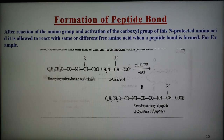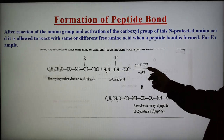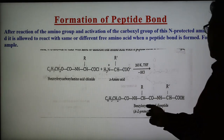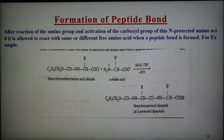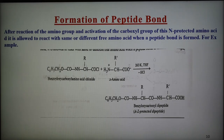Regarding the formation of peptide bond, the carboxyl group of an N-protected amino acid is allowed to react with the same or different free amino acid, and a peptide bond is formed. Here is shown one reaction — the benzoyloxycarbonyl amino acid chloride with an alpha amino acid at this temperature in THF solvent — and we get CONH linkage, known as benzyloxycarbonyl dipeptide or Z-protected dipeptide. In this way, protecting groups are used.